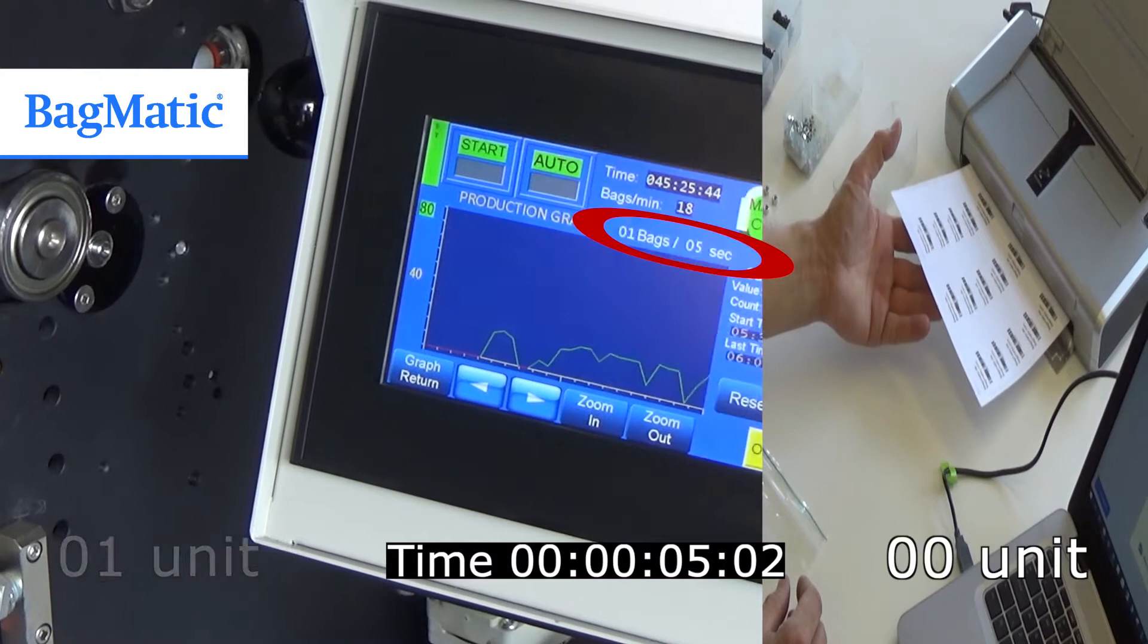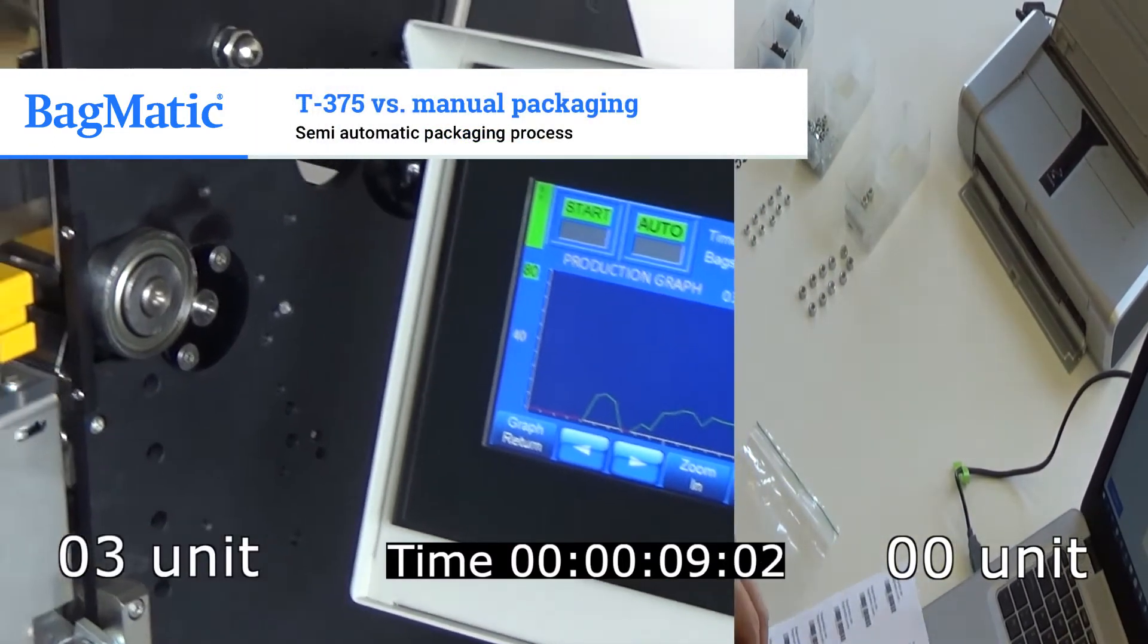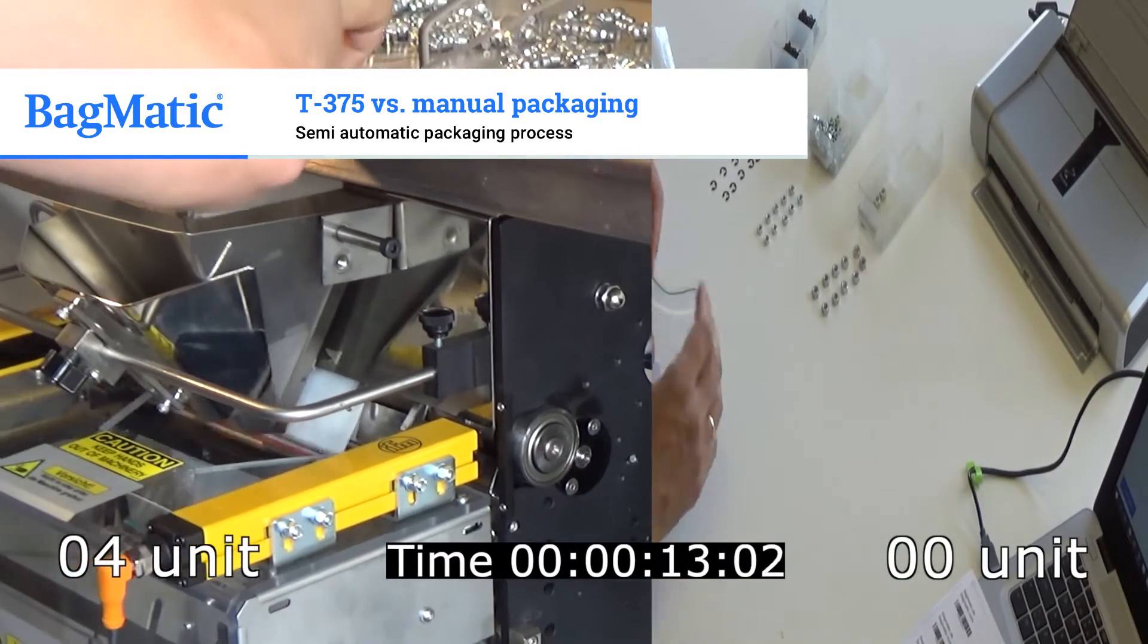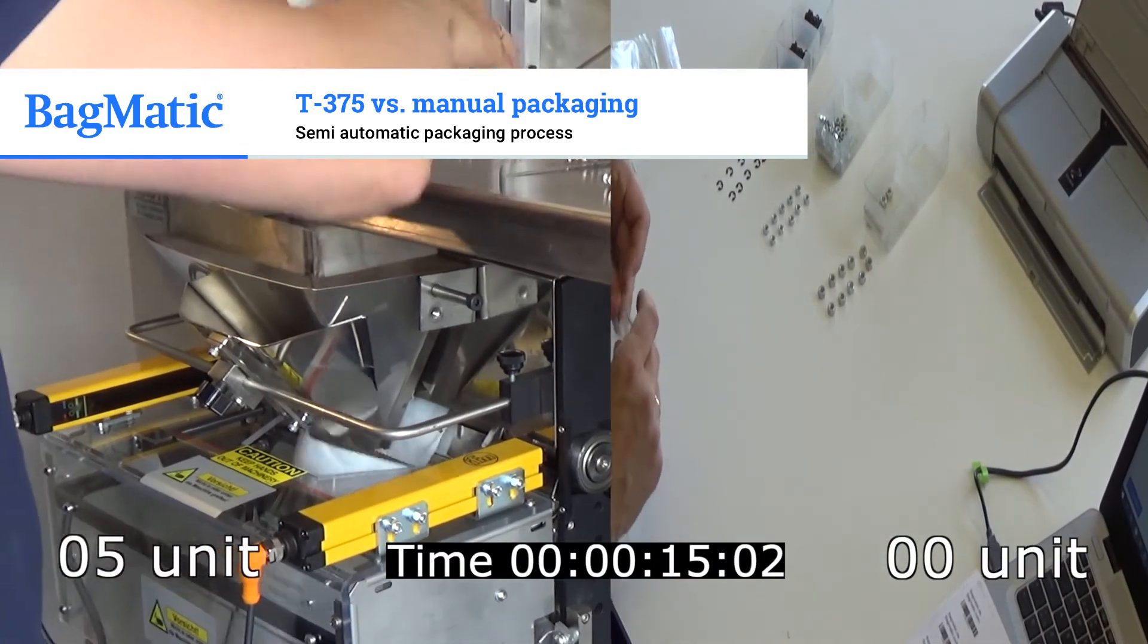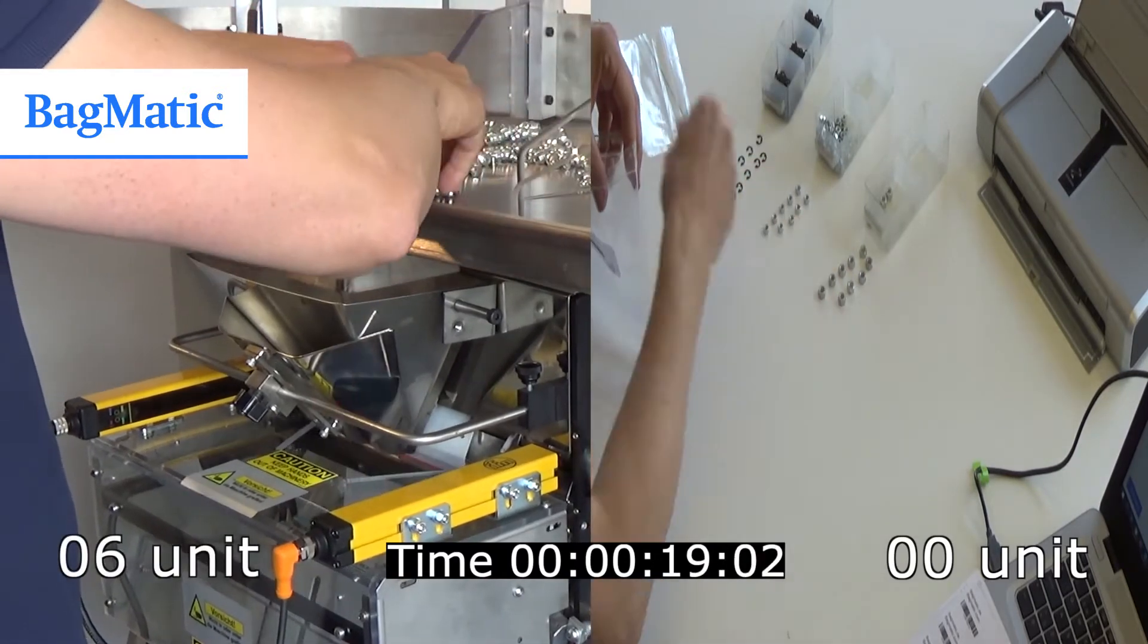In this comparison between manual packaging on the right side and semi-automatic packaging on the left side with our tabletop machine Bagmatic T375 plus partition table, you can see the time difference in the packaging process.